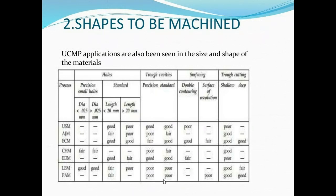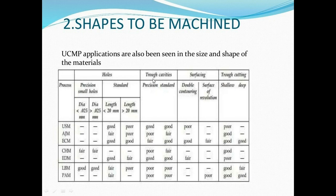Based on diameter: if the length is more than 20mm, ultrasonic machining is good; below that length, it is poor. For honing, electrochemical machining is well suited. Operations covered include: threading, deburring, grinding, etching, honing, shallow holes, and deep holes. The table indicates which machine is suitable for each operation.